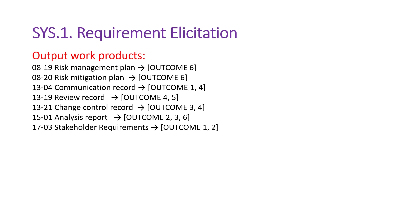The output work products of this process include: risk management plan, risk mitigation plan, communication records, review records, change control records, and the requirements elicitation analysis report — document ID 1703 — along with the stakeholder requirements. This is the main documentation outcome of this process. Thank you for your time — if you like this video click like, and subscribe for more interesting topics on automotive.